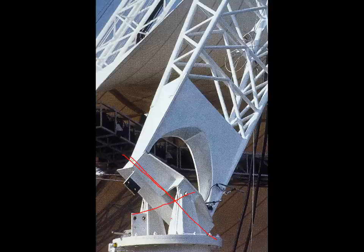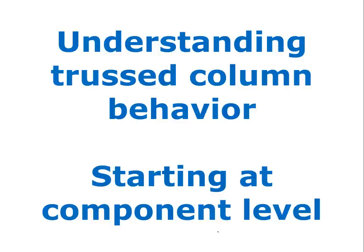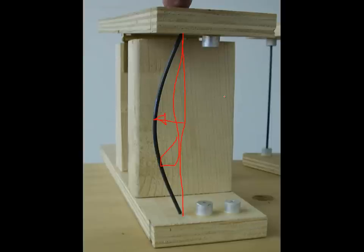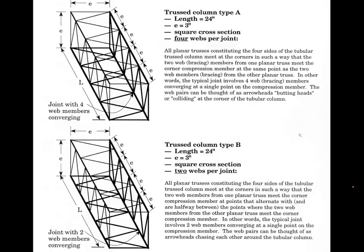To understand truss column behavior starting at the component level, we take a piece of PVC rod. This was straight originally and has now started to buckle — there's just a finger pushing down to show the general shape, not pushing any further than necessary to create this half sine curve, which is the classic buckling shape. We would like to brace that by triangulating it.